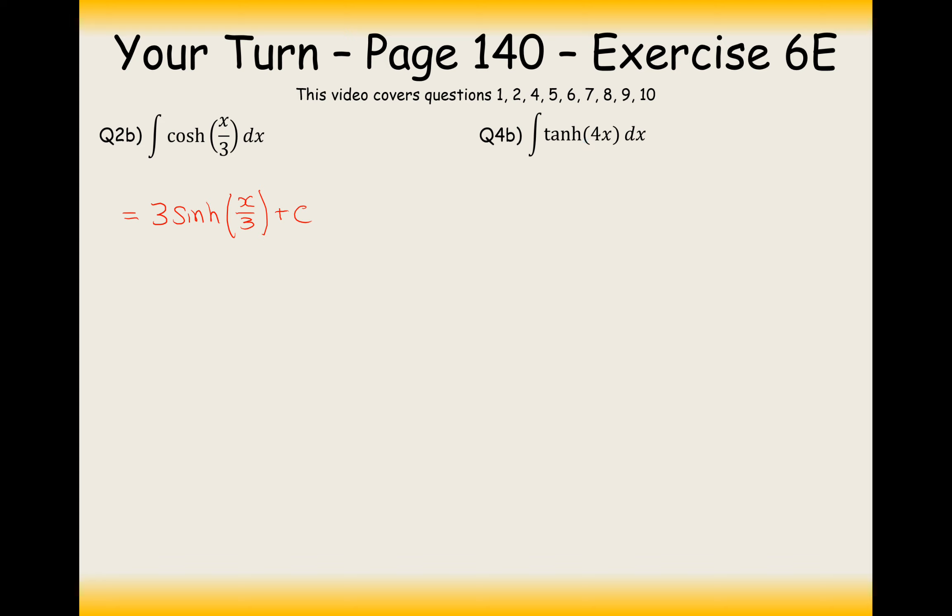Because cosh was on the bottom, the answer to this is going to be 1 quarter, because you divide by that 4 to the front, ln of cosh, so it would be cosh 4x plus C. And there we are, those are the two answers to these questions here.